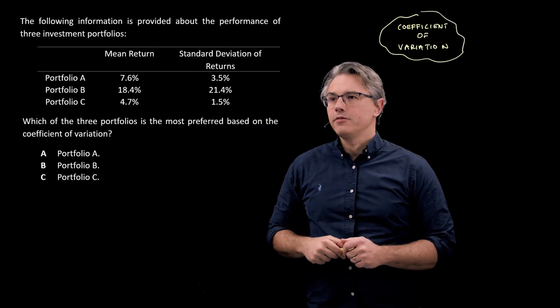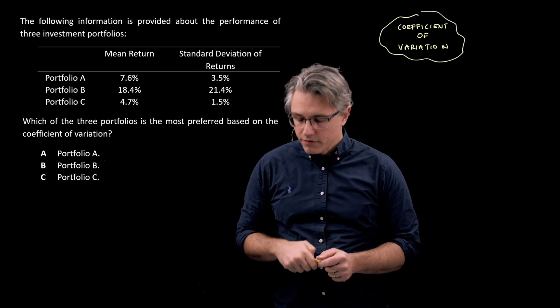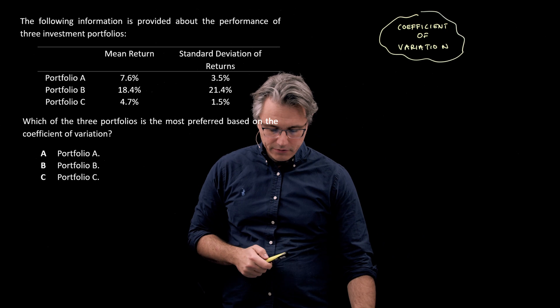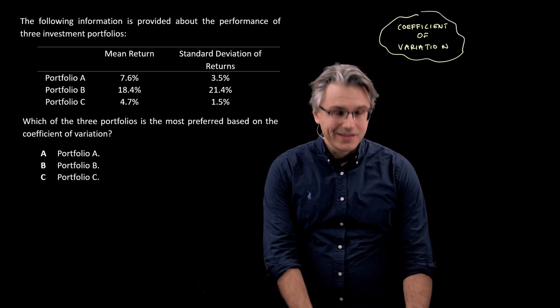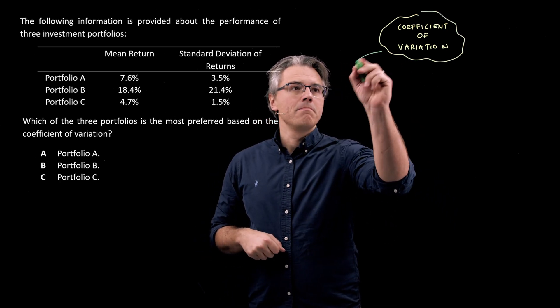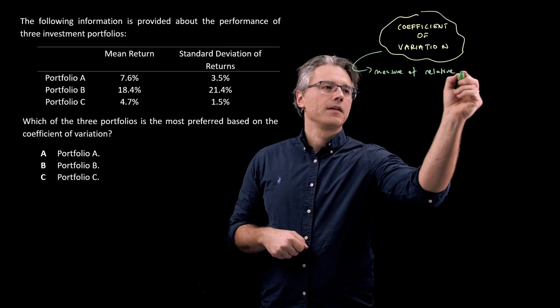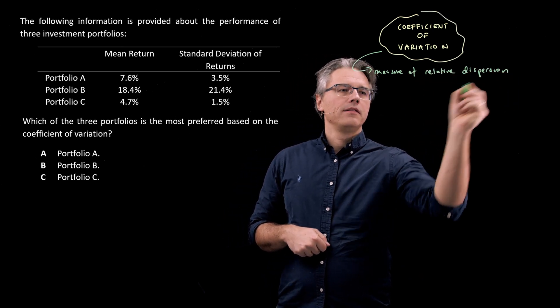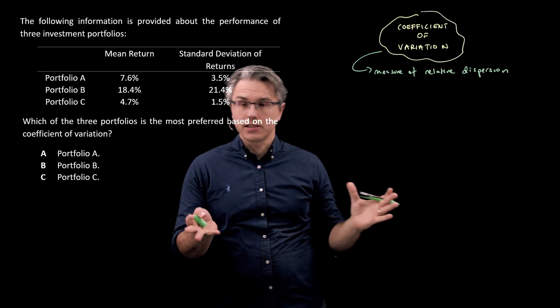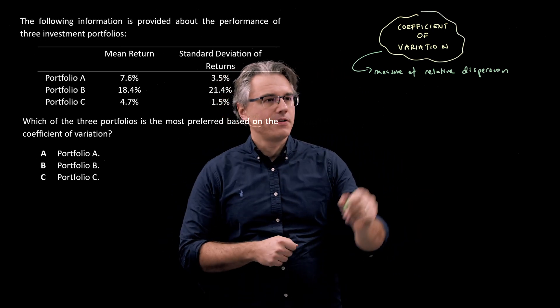Which of the three portfolios is the most preferred based on the coefficient of variation? Okay, so as I said, this is a measure of relative dispersion. And the way we express it, the way we quantify it is very simple.